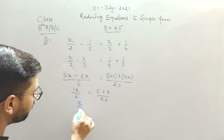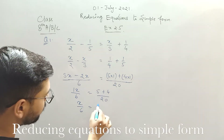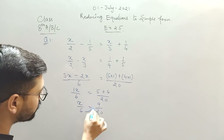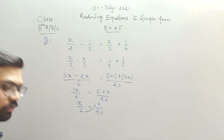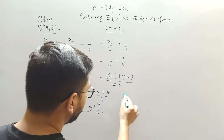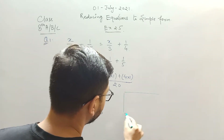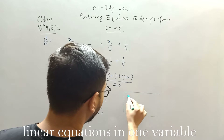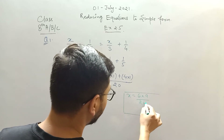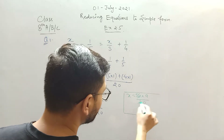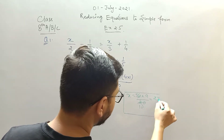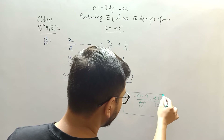Now x divided by 6 equals 5 plus 4, which is 9, divided by 20. You just need to cross multiply to get the value of x. So x equals 6 into 9 divided by 20. Since 2 threes are 6 and 2 tens are 20, the answer is 9 threes are 27 divided by 10. So this is your answer.